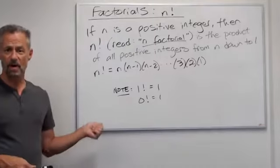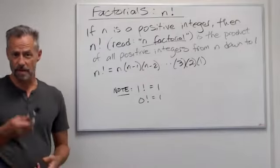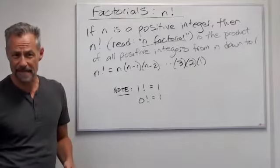And note, I have here that 1 factorial by definition is 1 and 0 factorial by definition is also 1. So let me show you a couple quick examples of what I mean.